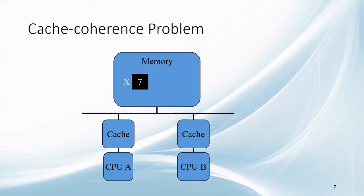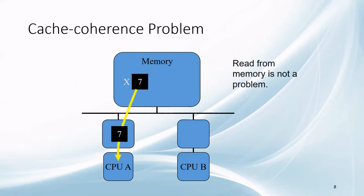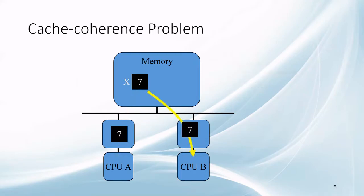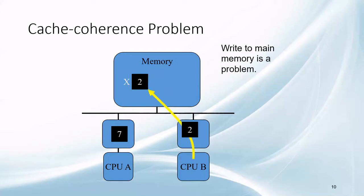In this diagram, you can see a shared variable X residing in the shared memory. When a processor tries to read the memory, there is no issue as the value does not change in a read operation. But when some processor wants to write on the variable, an older copy of X may reside with processor A. When processor B tries to change the variable to 2, A still retains the obsolete value of X. This is what the cache coherence problem is.